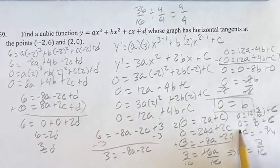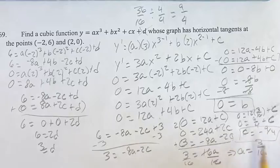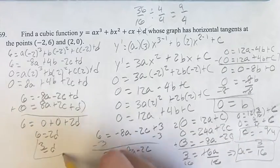So now we know b is 0, we know c is negative 9 fourths, we know a is 3 sixteenths, we know d is 3.